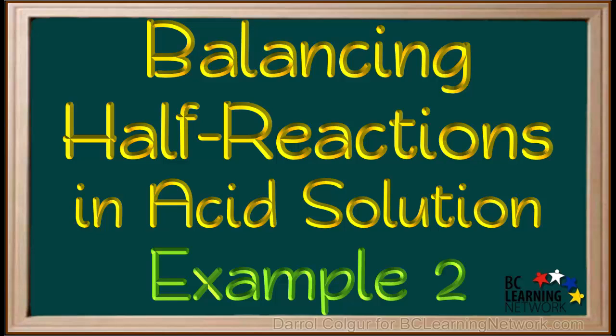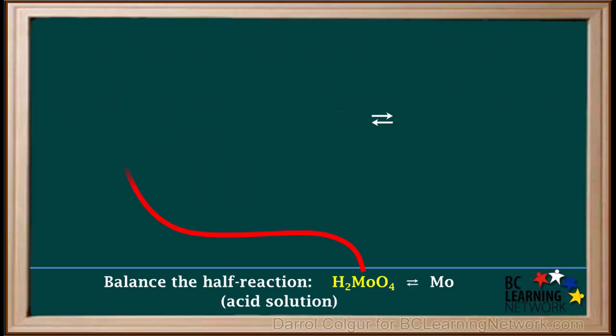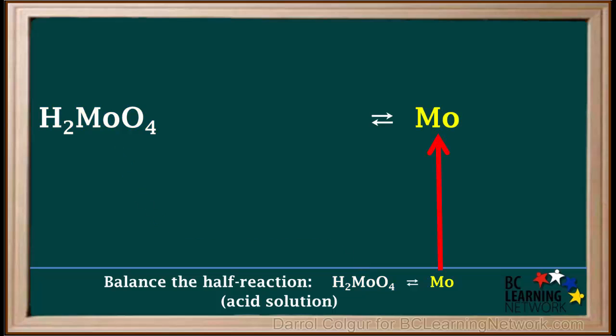Here we'll go through an example of balancing a half reaction in acid solution. We're asked to balance the half reaction H₂MoO₄ gives Mo in acid solution. We'll start by writing H₂MoO₄ on the left side and Mo on the right side, leaving some room to add other things.